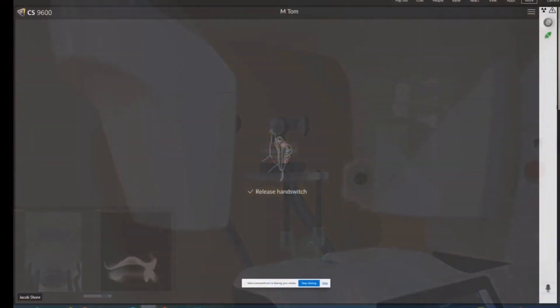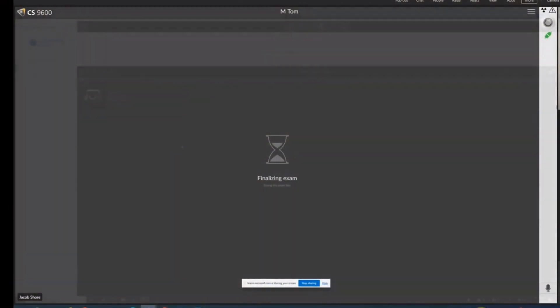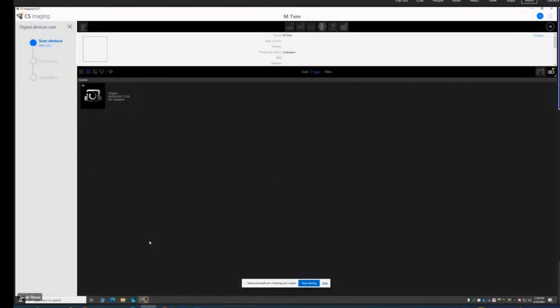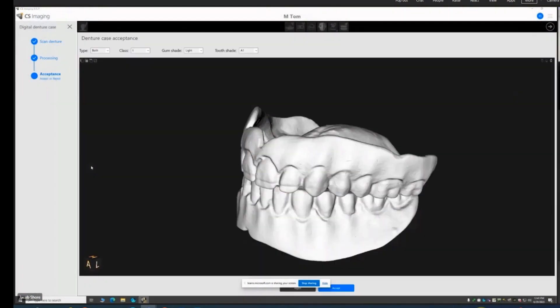After you release the hand switch, the computer takes approximately a minute to reconstruct the denture on the screen. When the reconstruction is complete, the scanned denture is displayed on the screen along with the occlusion.